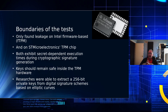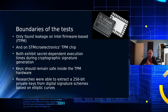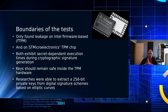Let's talk about the boundaries of the test and narrow this down so we don't go running around saying the sky is falling, because it's not quite as bad as some of the industry paints it. But it is still a pretty significant problem. The leakage is only found on Intel firmware-based chips and on ST Microelectronics TPM chips — both of those exhibit secret-dependent execution times during cryptographic signature generation. The keys should remain safe inside TPM-based hardware, so that shouldn't be a problem if you have a dedicated TPM chip on your machine.